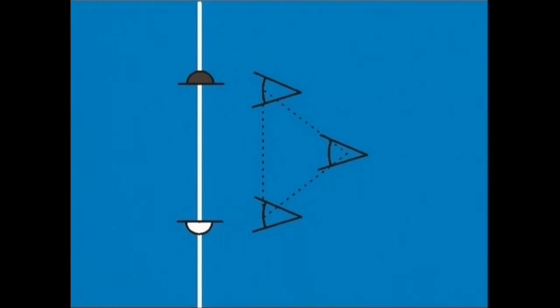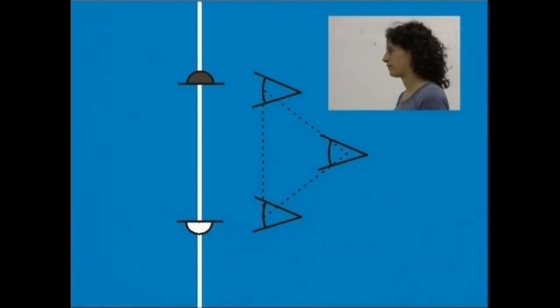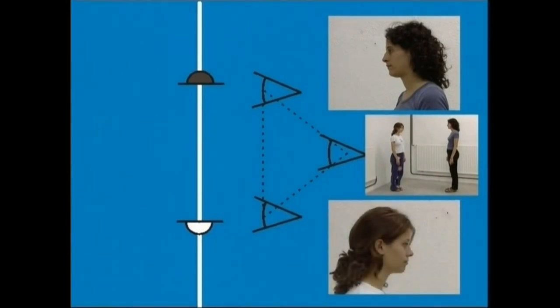Horregatik deitzen da aldagai hau, kamera kokagune paraleloetan. Triangeluan kokaturiko kamerek hartzen dituzten hiru planoetan aktoreak banaka edo taldeka ager daitezke. Eta beti soslaiz.